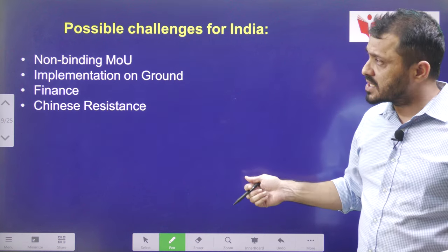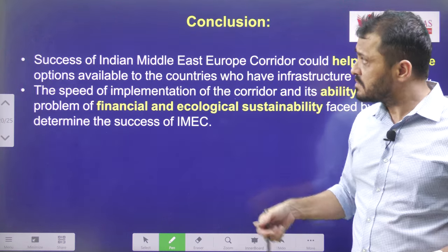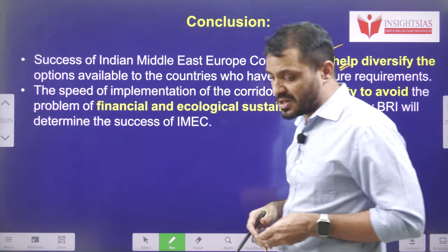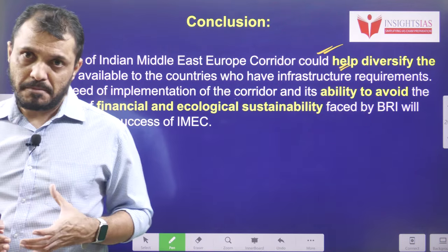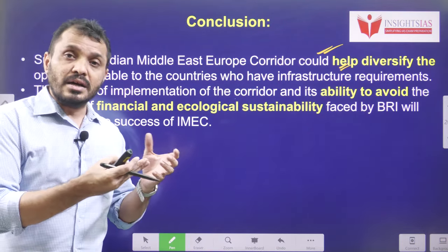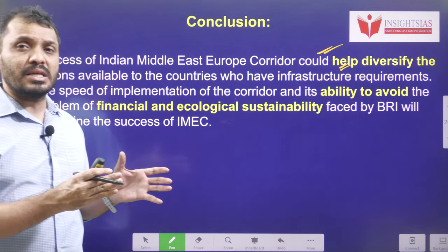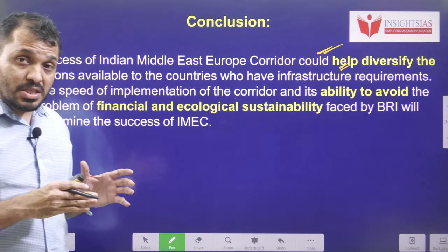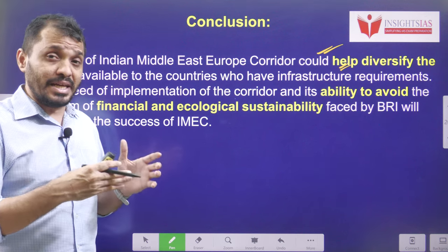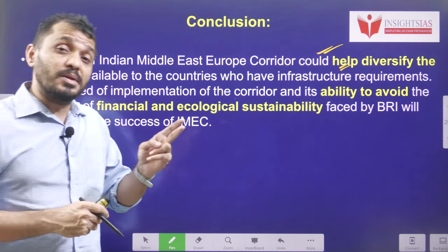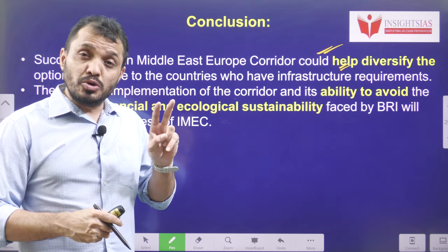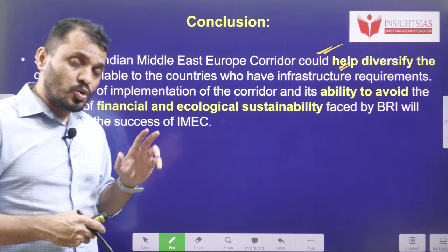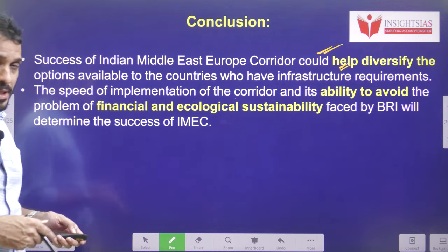The significance and possible challenges of this project have been discussed. The conclusion is that the success of this project depends on how diverse and inclusive it can be — how all stakeholders can get along. One more important factor is how financially as well as ecologically viable this project is, because these are the two parameters where BRI was unable to address — the financing issue as well as the sustainability issue. This project has to address those issues as well.